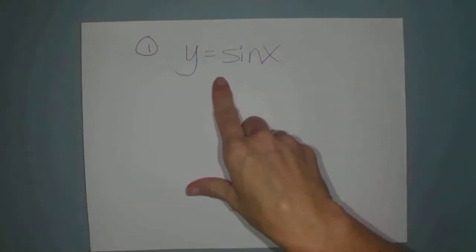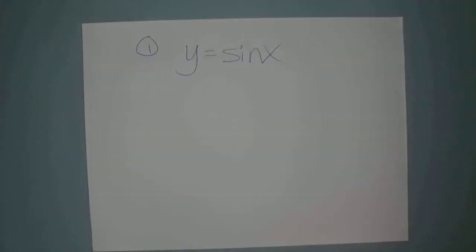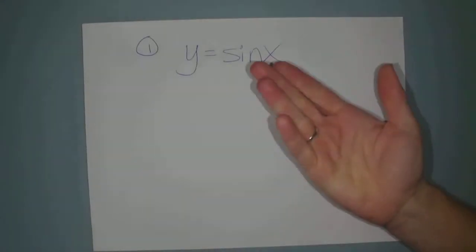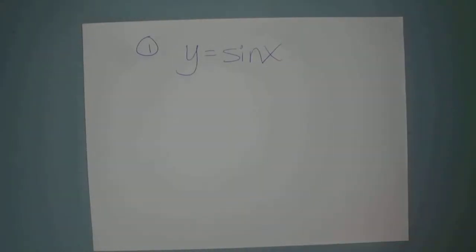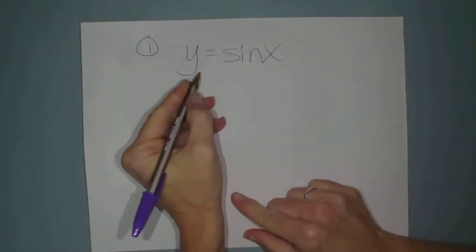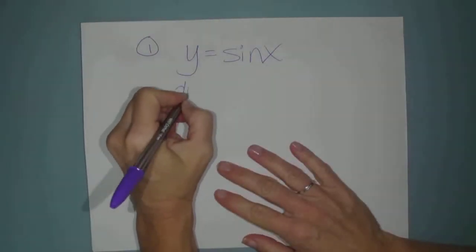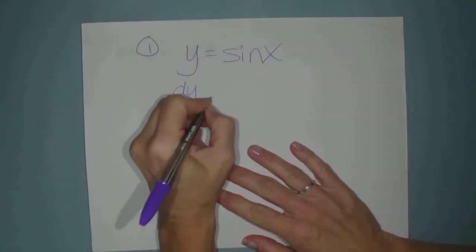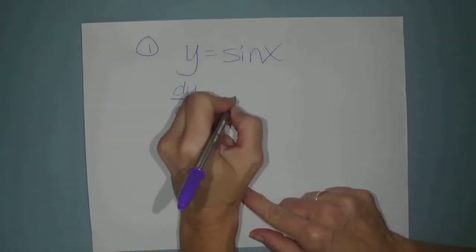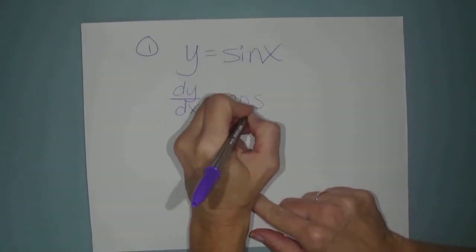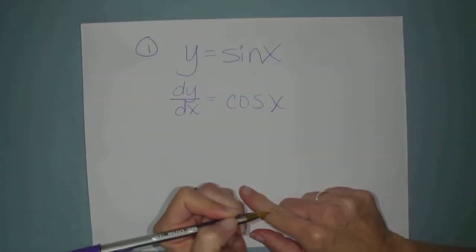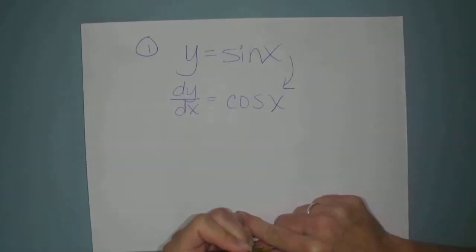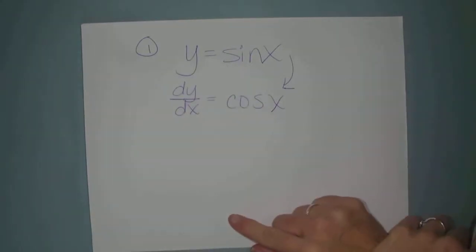So starting with example one: y equals sine x. We already know the derivative of this from our previous lesson. The derivative of y with respect to x — I've memorized it — it's just the cosine of x. It's that simple. The derivative of sine x is cosine x.